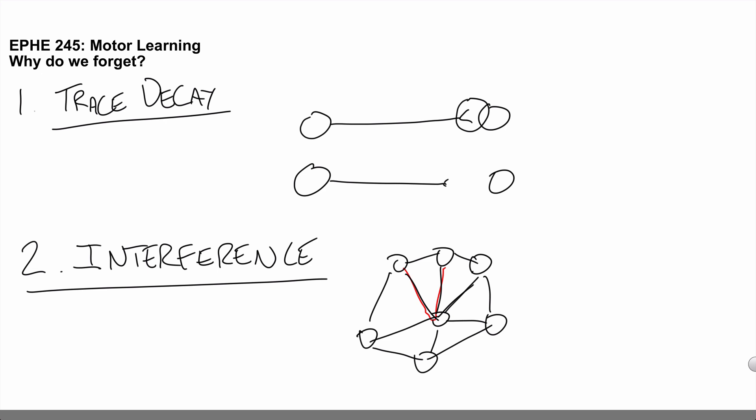the interference theory posits that if you have a whole bunch of interconnected neurons and if a new set of neural connections develops, there might be interference in these common areas that are shared by both of the memory traces, and this interference results in forgetting or a weakening of the memory.